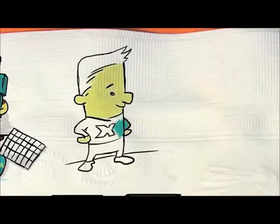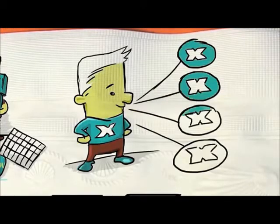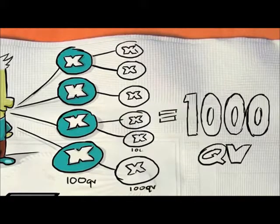Second, maintain at least four active personally enrolled members, or PEMs. Third, have at least 1,000 QV in your first two levels.